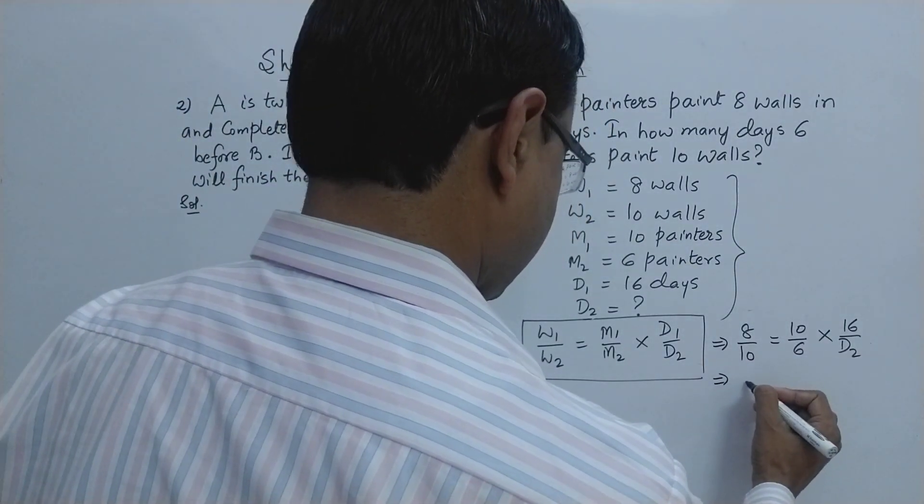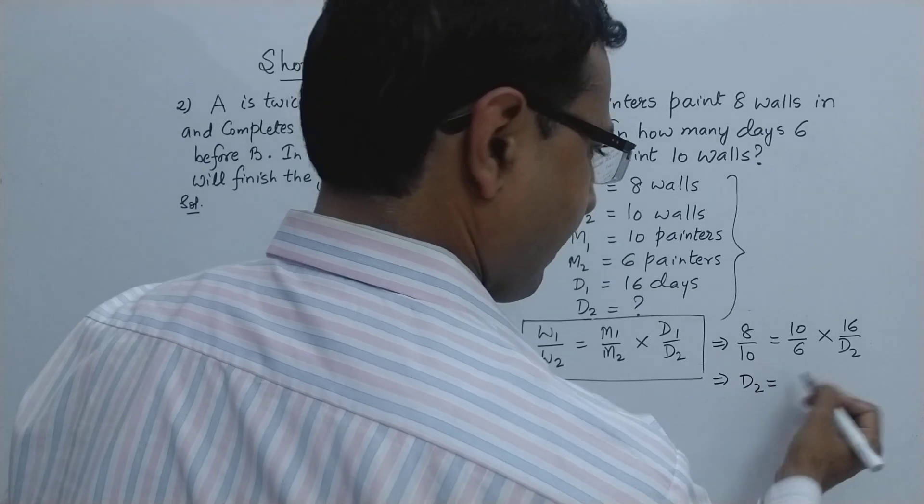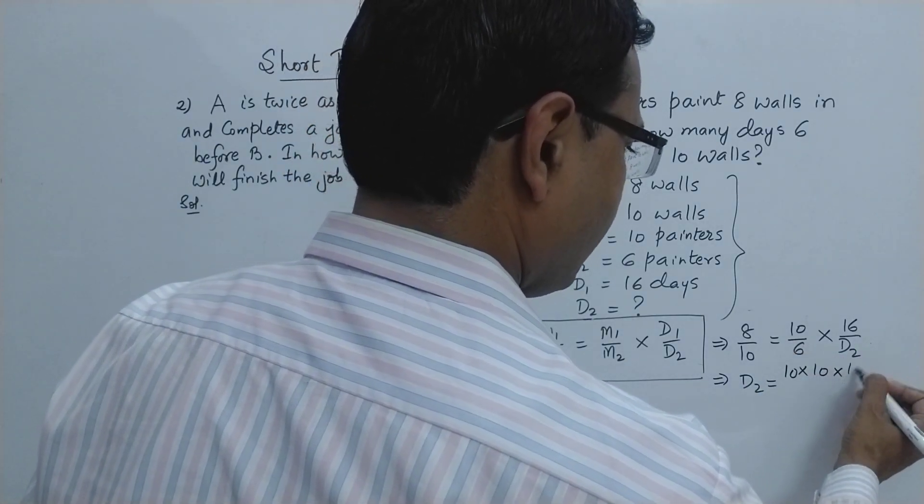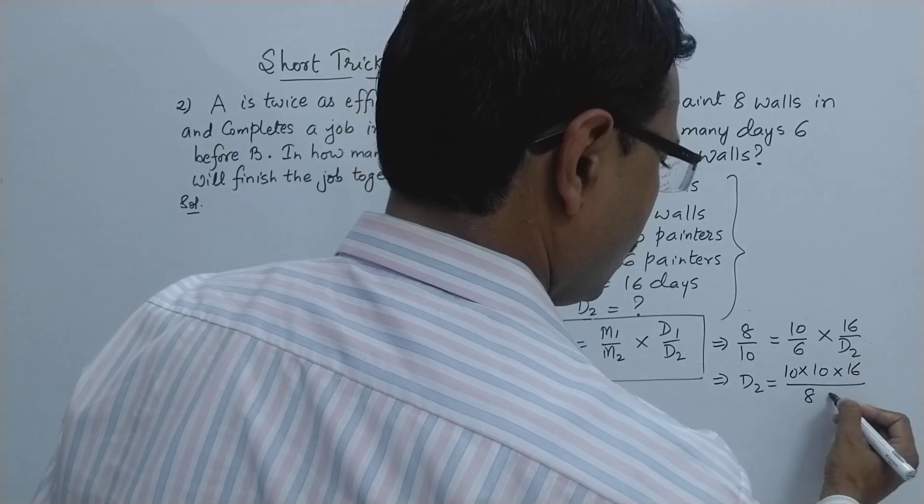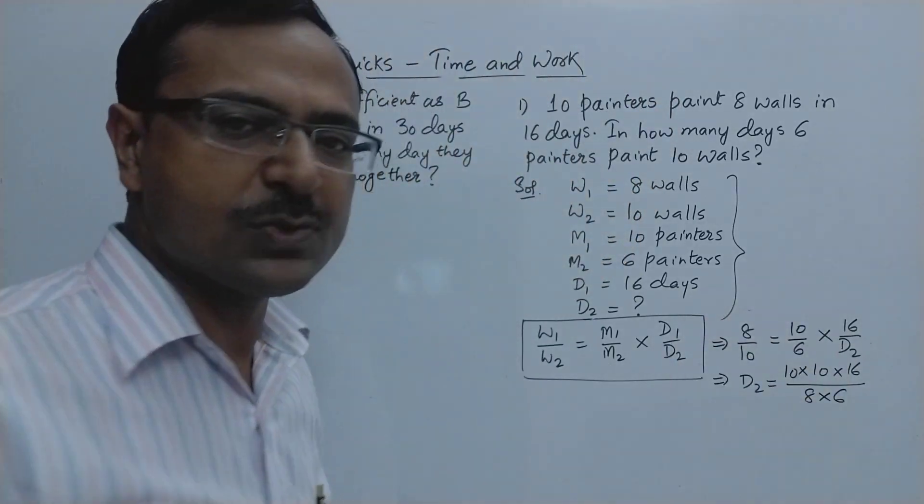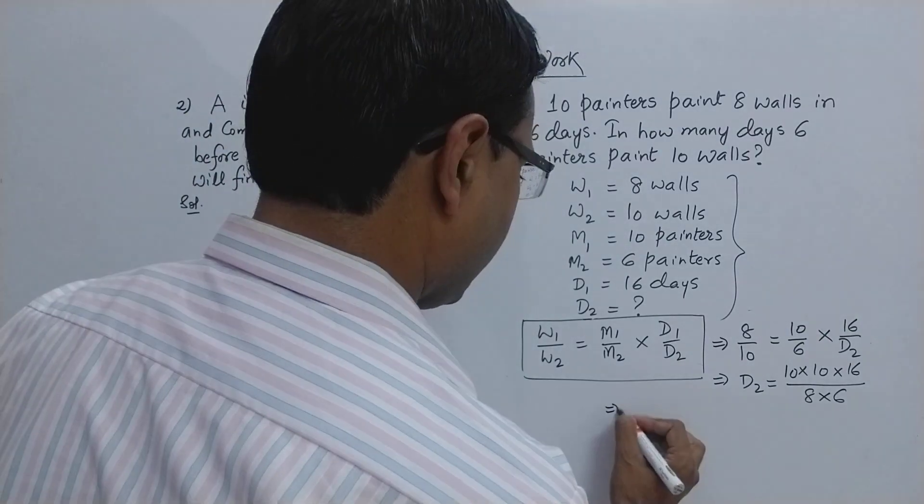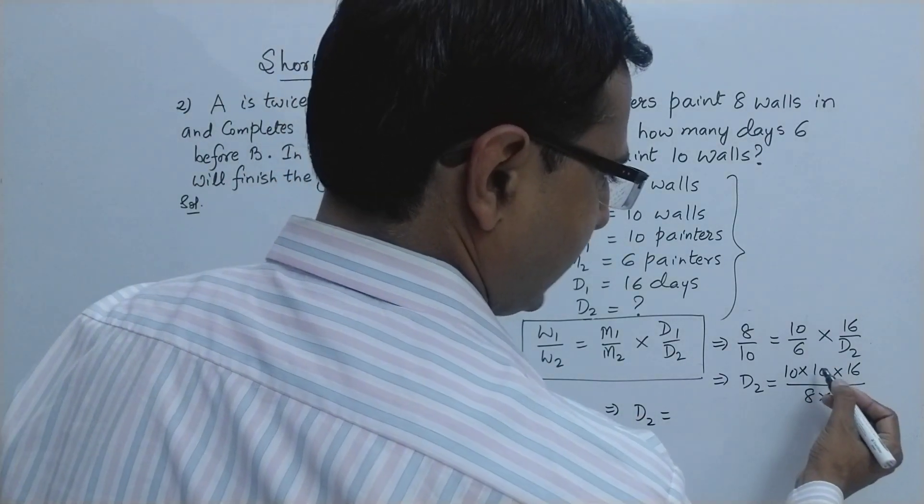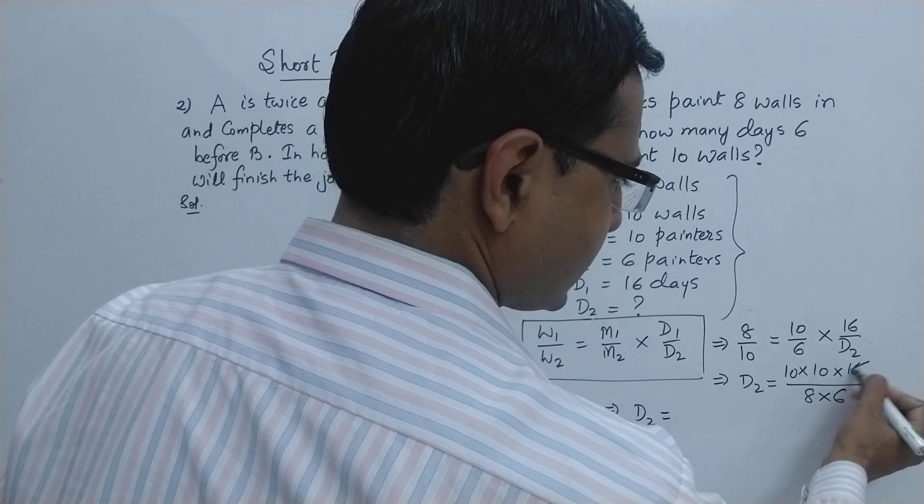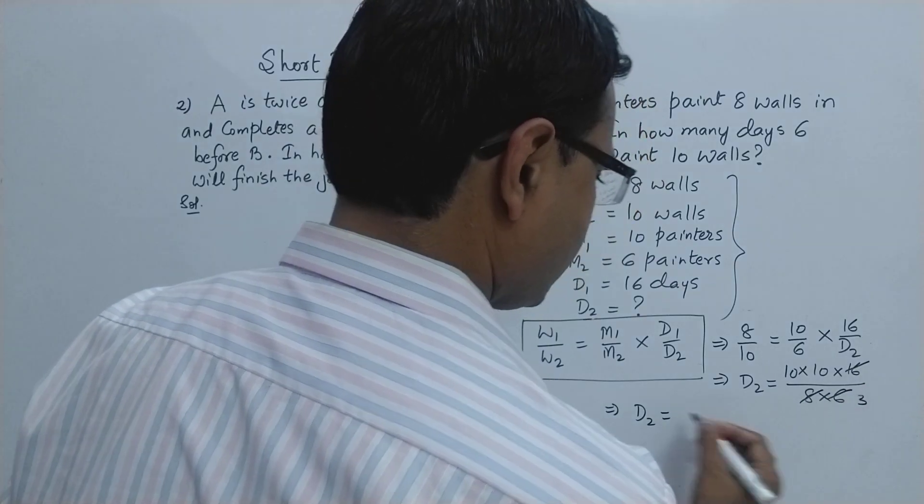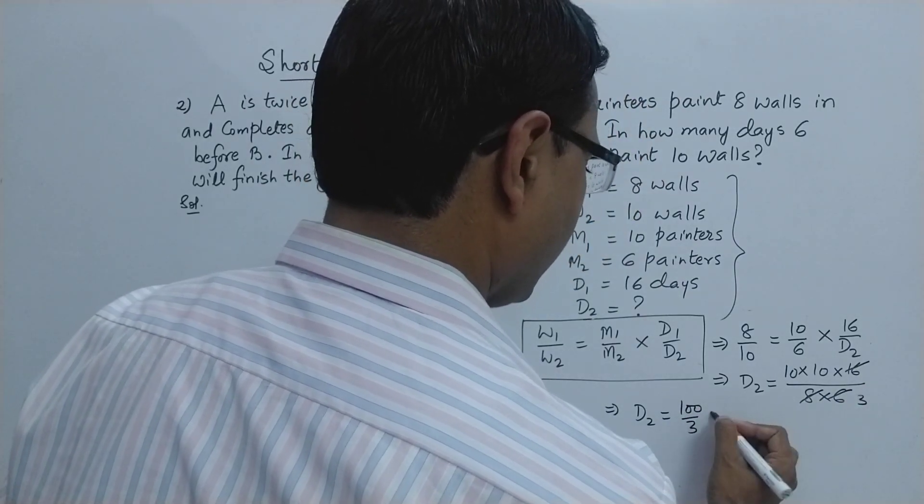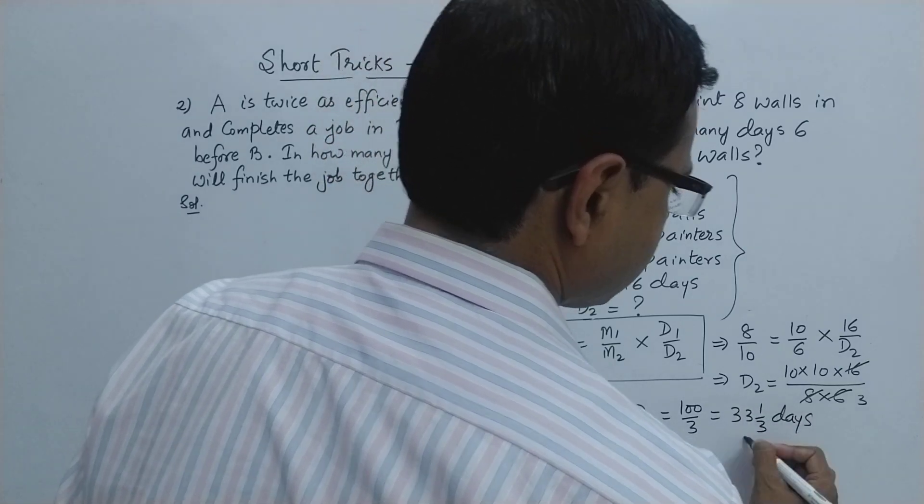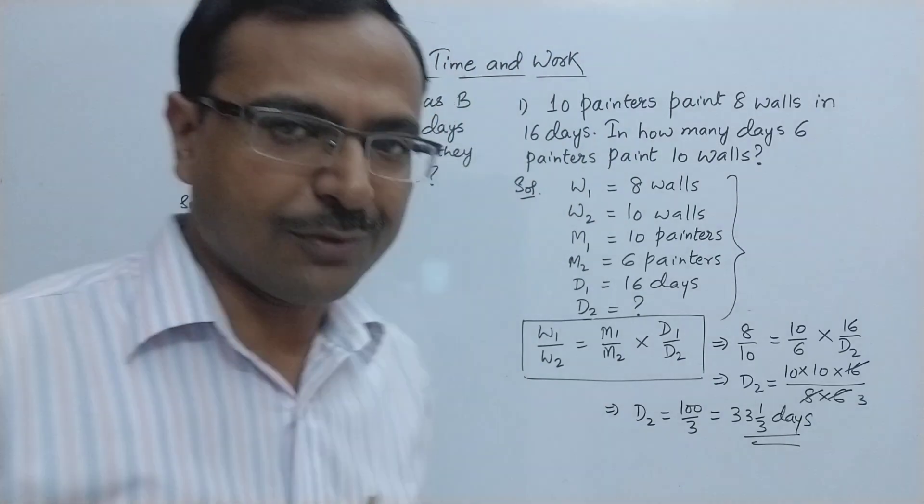And if you can see here, D2 will be 10 into 10 into 16 upon 8 into 6. Now you can solve this one and your answer will be D2 is equal to, so 8 and 6 are 48, so 16 goes exactly three times, so this is 100 upon 3 or 33 and 1 by 3 days will be the answer of this interesting question of time and work.